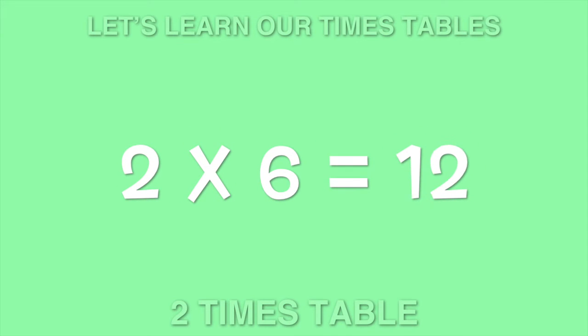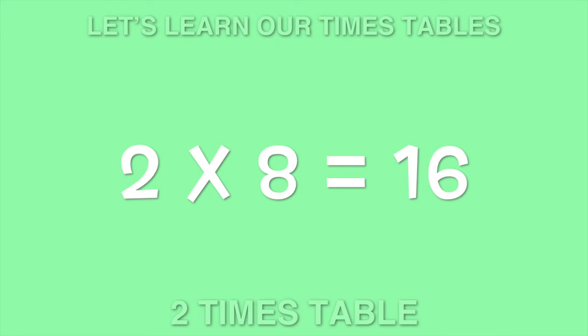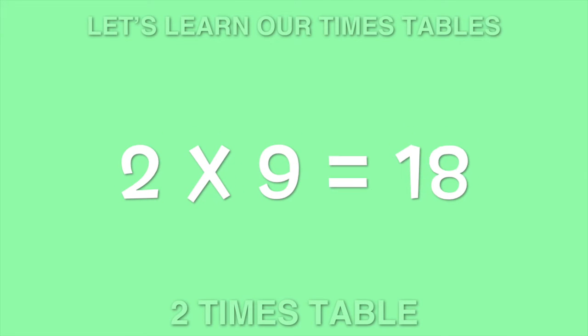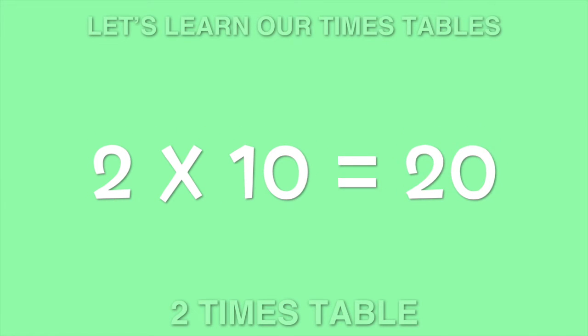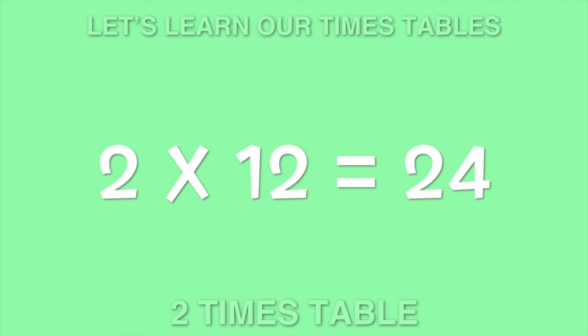Two times six is twelve. Two times seven is fourteen. Two times eight is sixteen. Two times nine is eighteen. Two times ten is twenty. Two times eleven is twenty-two. Two times twelve is twenty-four.